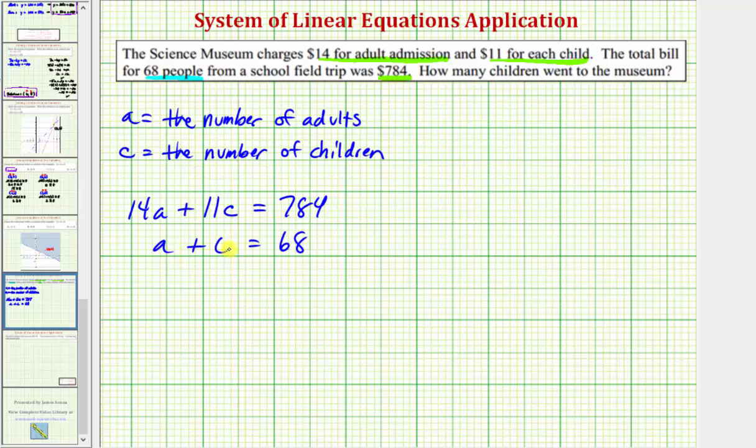Now we need to find the values of A and C that satisfy both equations, so we have to solve this system of equations. Because we can easily solve the second equation for A or C, let's use the substitution method.